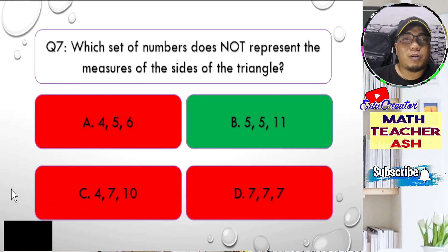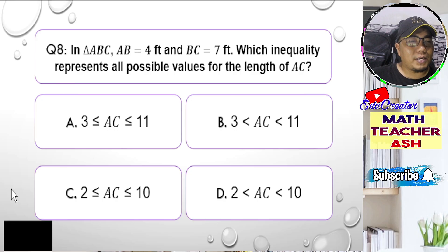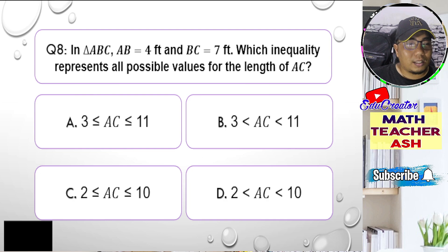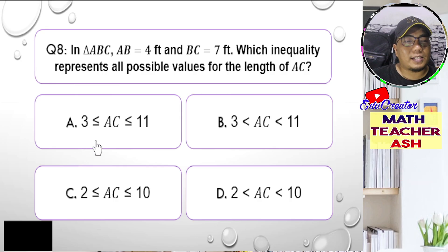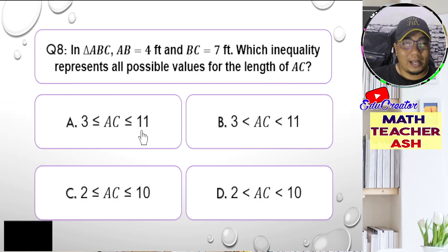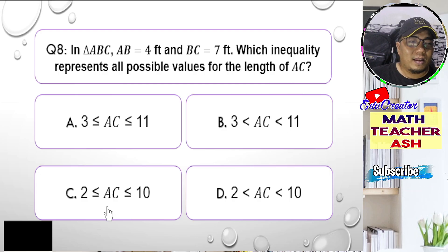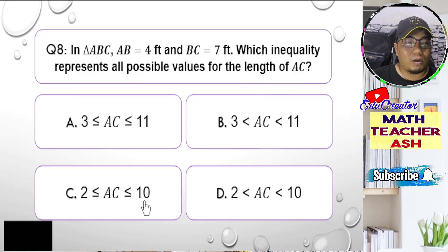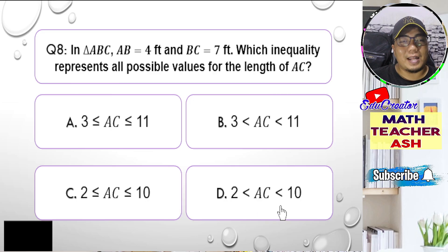Let us go to question number eight. In triangle ABC, AB = 4 feet and BC = 7 feet. Which inequality represents all possible values for the length of AC? Is it A, 3 ≤ AC ≤ 11; B, 3 < AC < 11; C, 2 ≤ AC ≤ 10; or D, 2 < AC < 10? I'll give you five seconds to think about your answer.